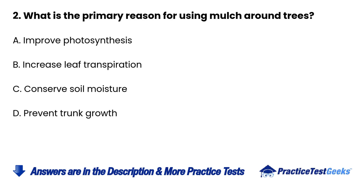Question 2. What is the primary reason for using mulch around trees? A. Improve photosynthesis. B. Increase leaf transpiration. C. Conserve soil moisture. D. Prevent trunk growth.